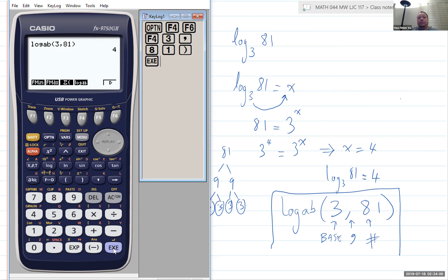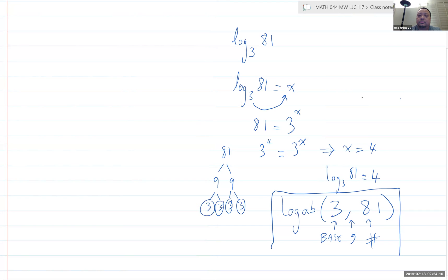Okay. So once again, you need to look for log AB and it's under option. It's under option. Calc. Next arrow. Log AB. Those are the words you're looking for. If you think in terms of the F keys, it's option F4, F6, F4.